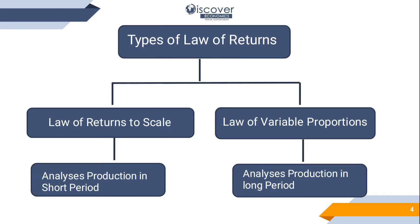Now there are two types of law of return: the law of returns to scale and the law of variable proportions. The law of returns to scale tells us that we analyze production in a short period, meaning the variable factor will be only labor and the rest of the factors will stay constant.